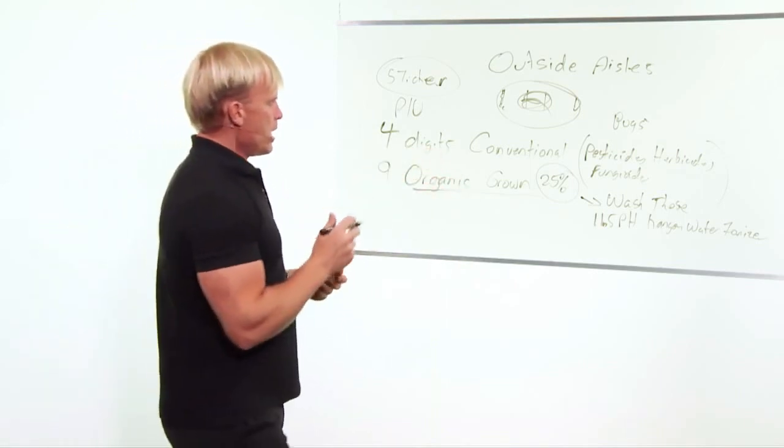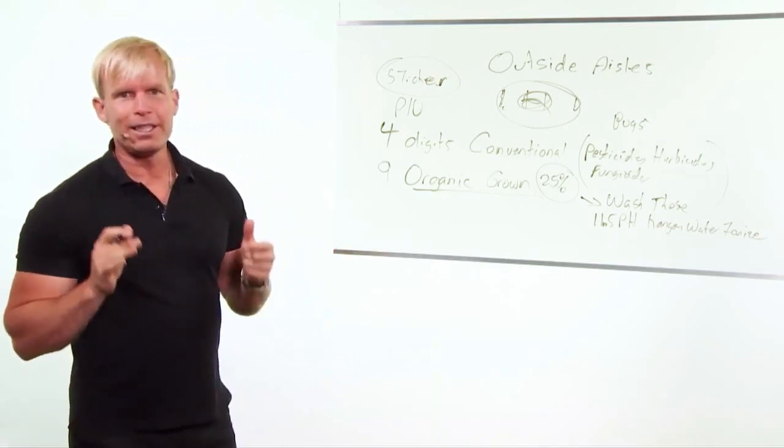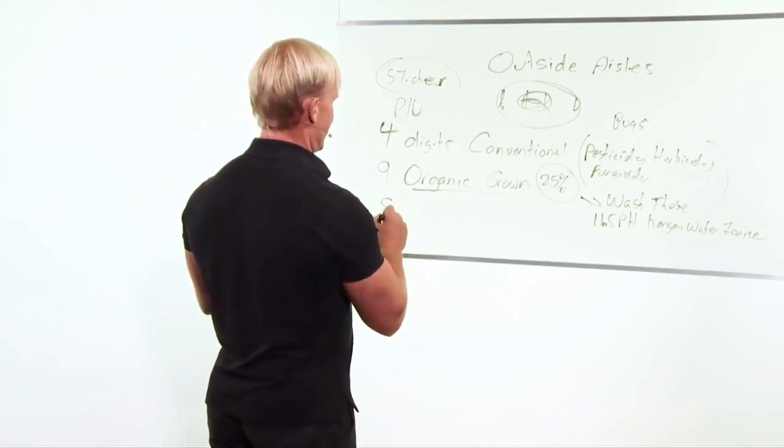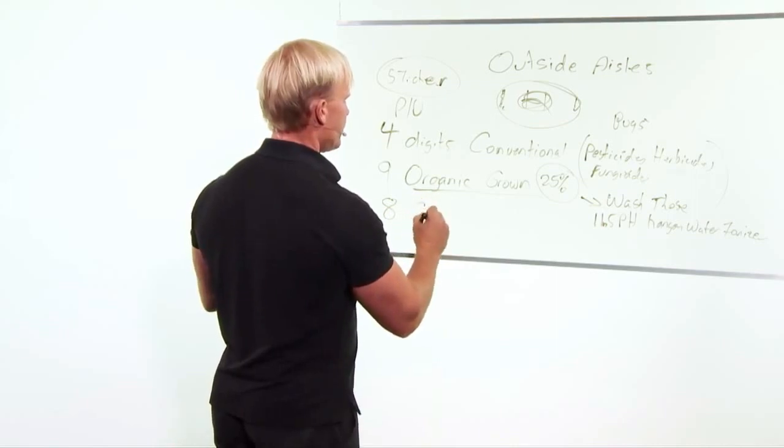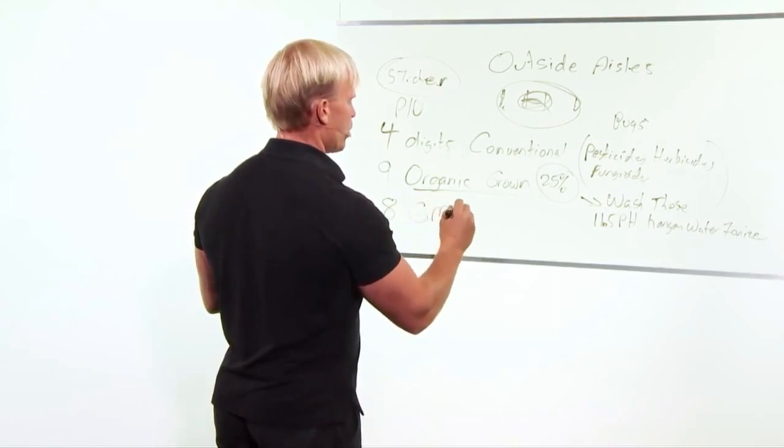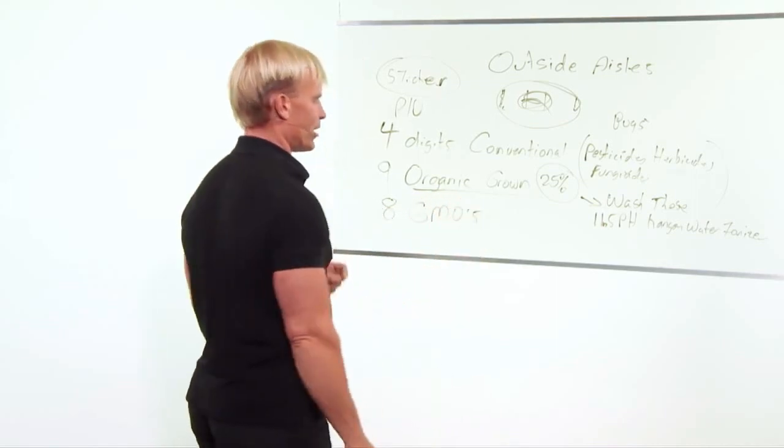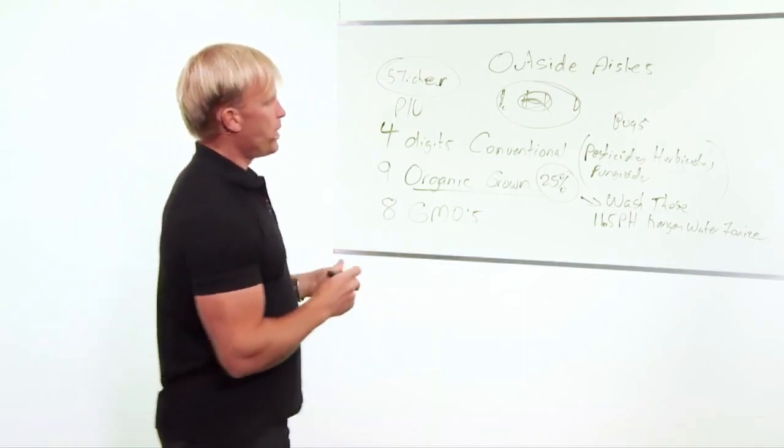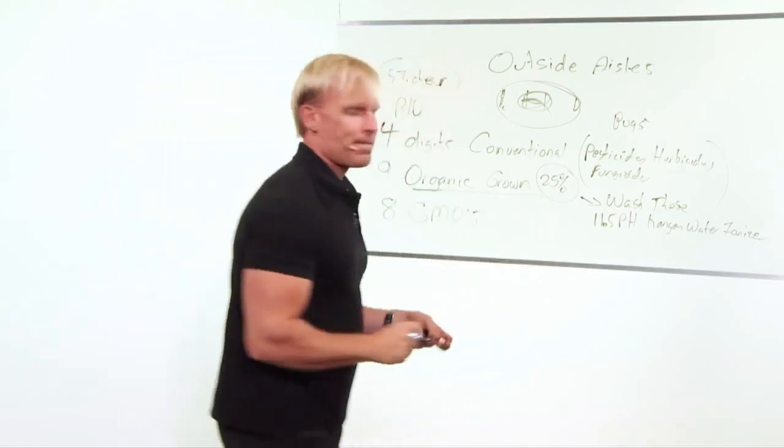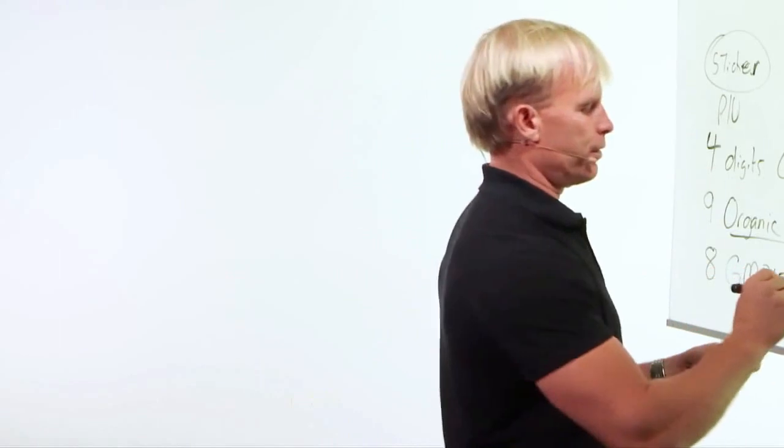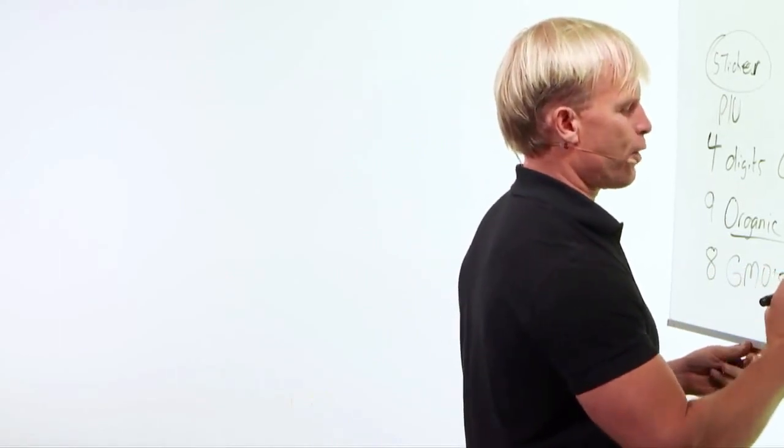Now the one that you really, really want to avoid is the number eight. This is GMOs or genetically modified organisms. These here, basically I call this stuff Franken food.